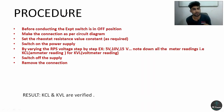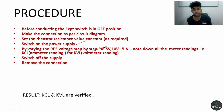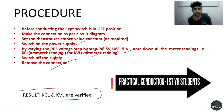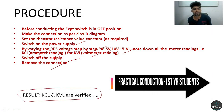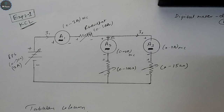Before conducting the experiment, here is the procedure: Everything must be in the off position — the supply must be off. Make the connections as per the circuit diagram. Set the rheostat resistance value as per your requirement and keep it at a constant value. Switch on the power supply and vary the RPS voltage step by step — 5 volts, 10 volts, or 15 volts. Note down all meter readings: ammeter readings for KCL, voltmeter readings for KVL. Switch off the power supply and remove the connections. Finally, write KCL and KVL are verified as your result.